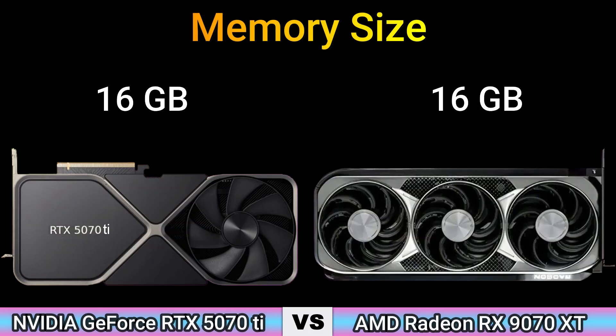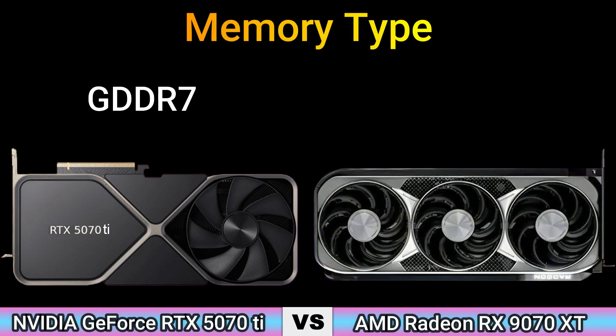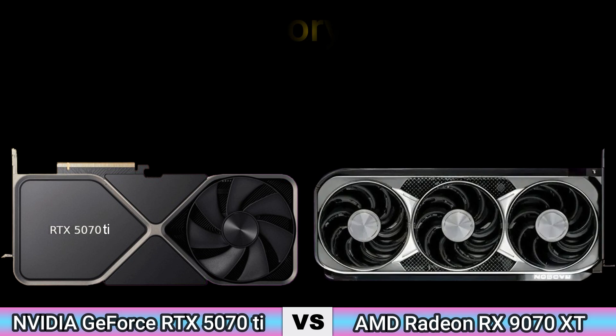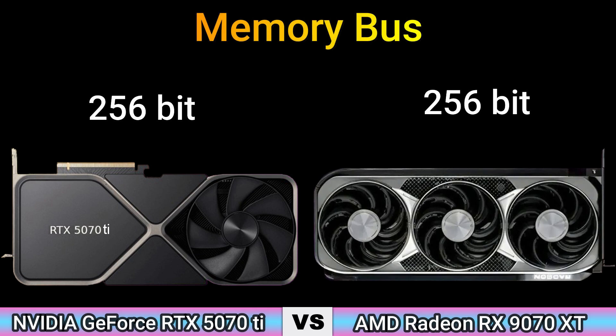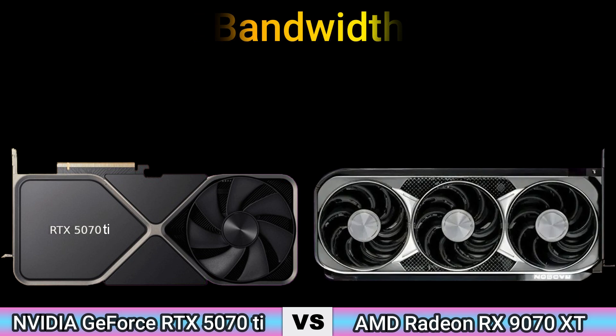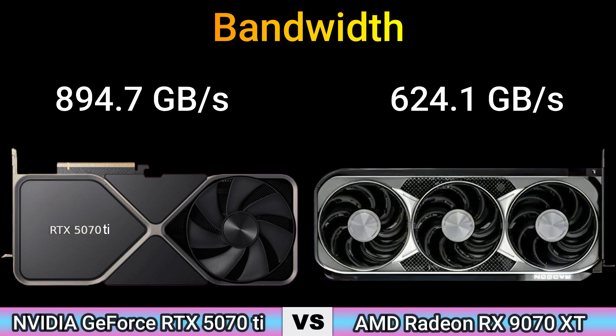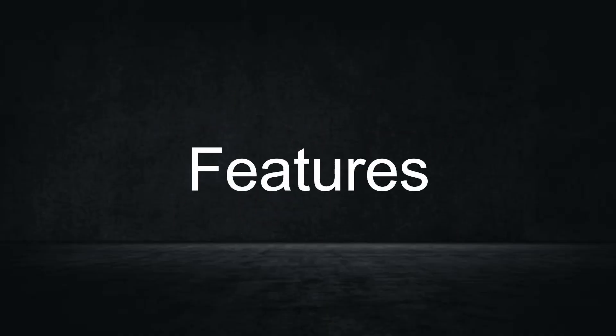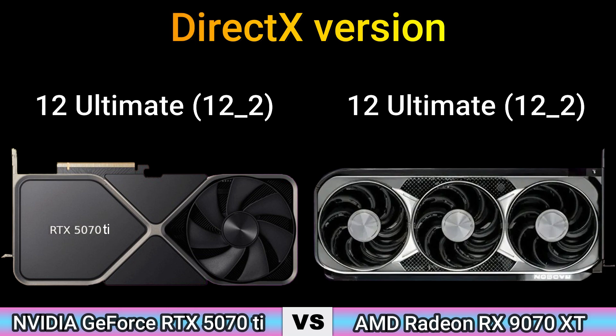Part 2 — Memory. Memory size: 16 GB and 16 GB. Memory type: GDDR7 and GDDR6. Memory bus: 256-bit. Bandwidth: 894.7 GB/s and 624.0 GB/s.